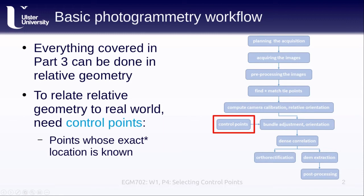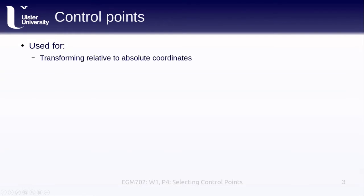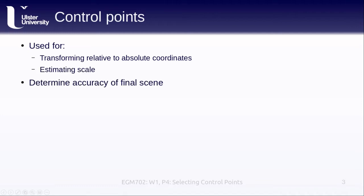Control points are points whose exact-ish location is known. The accuracy of the products we extract from our images is going to depend on the accuracy of our control points. You can use control points that are fairly inexact and still get some usable measurements, but the more precisely you know your control point locations, the better results you will get. Control points are used for transforming relative to absolute coordinates, for estimating scale, and they determine the accuracy of the products we extract from our images.